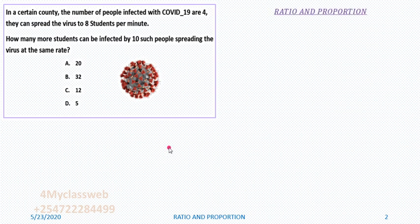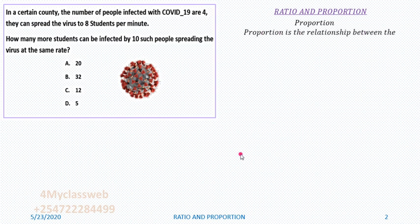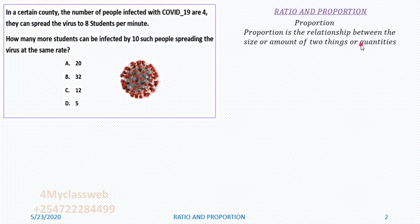This question comes from the topic on ratio and proportion. Part of this work was covered in class 7 and more of it in class 8, and it is on proportion. Now, what is proportion? Proportion is the relationship between the size or amount of two things or quantities. We look at the relationship between 4 and 8, and therefore what will be the relationship between 8 and the other quantity.